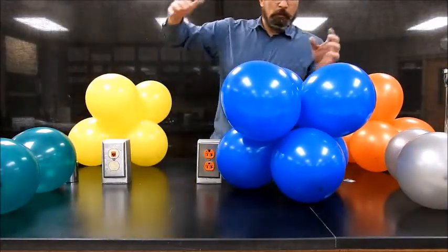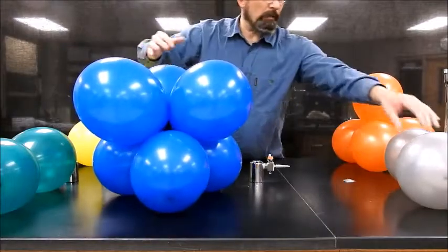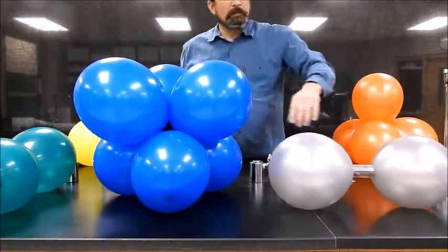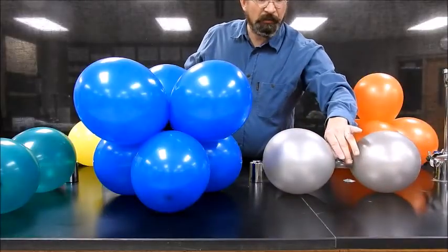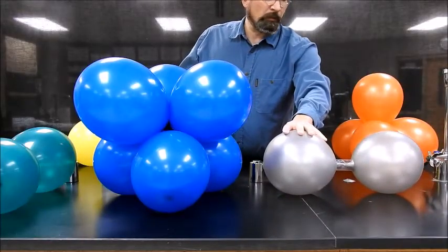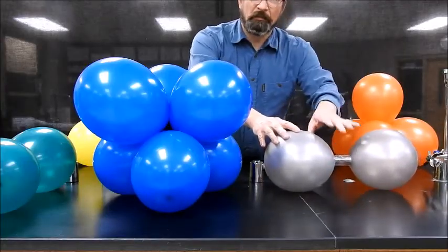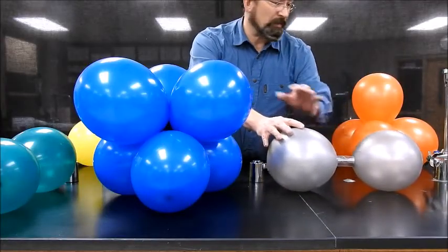We have our different molecular shapes here. I mean, our different electron set geometry. So, we've got linear right here with two regions around the central atom. As far as hybridization goes, this represents sp hybridization.